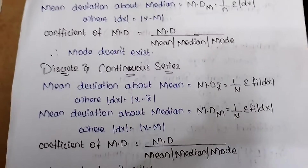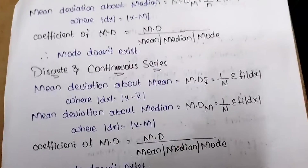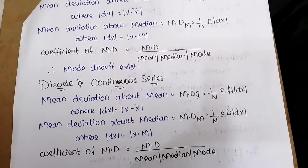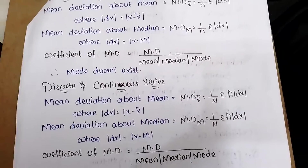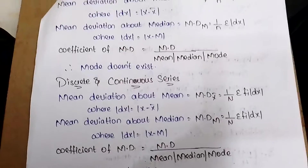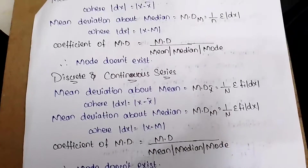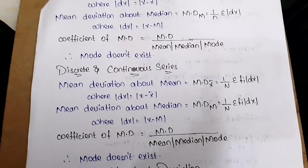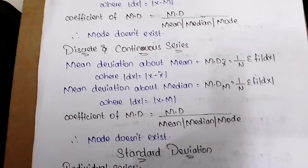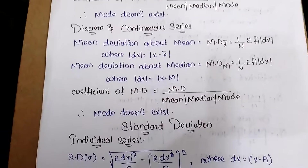For discrete and continuous series: mean deviation from mean = (1/n) Σfi|dx|, where dx = x − mean. Mean deviation from median = (1/n) Σfi|dx|, where dx = x − median. Coefficient of mean deviation = mean deviation / mean (or median).